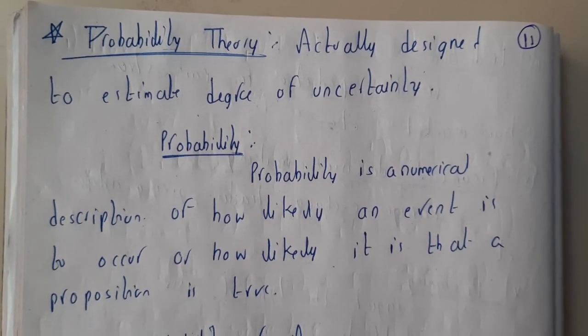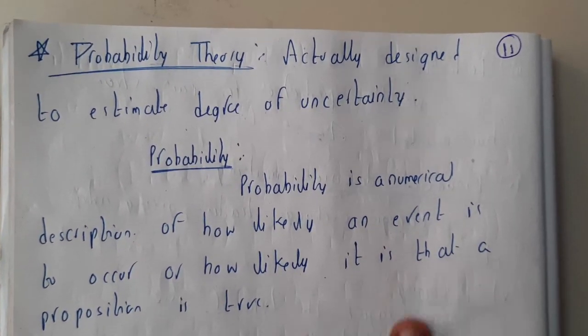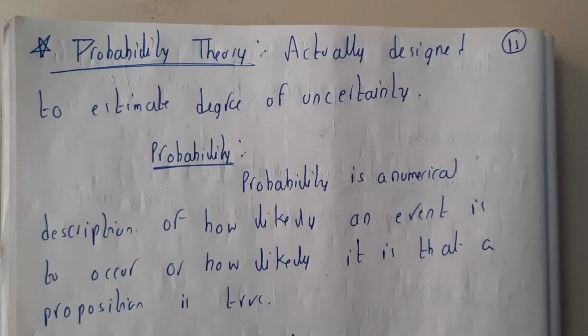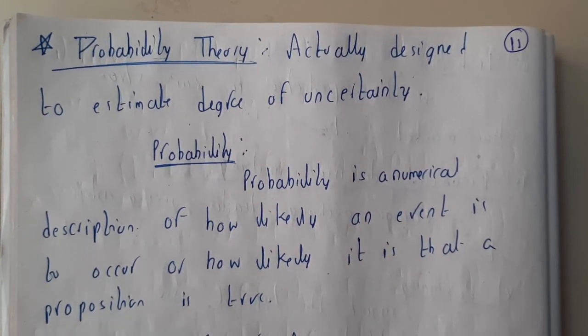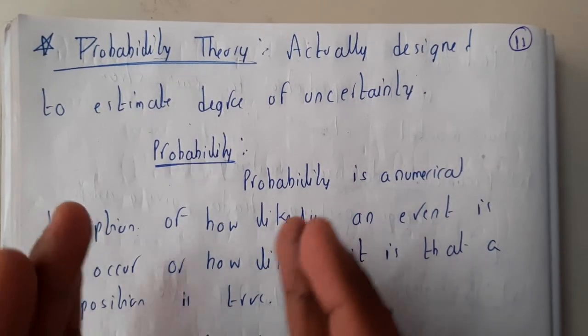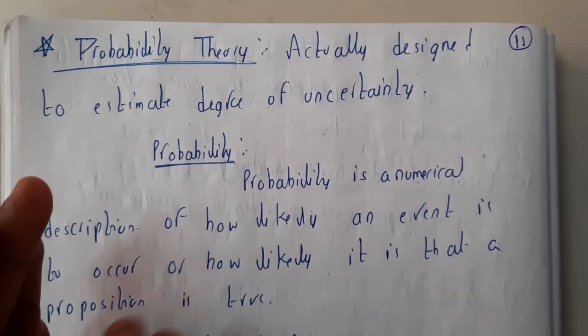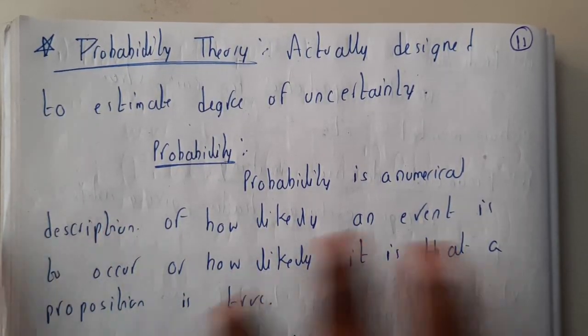Because these are the basic concepts of any mathematical subject. So let us go through the probability. Probability is nothing but to check the uncertainty or when does that particular event occur. So if there are n number of chances, how many chances are meant for this particular thing?